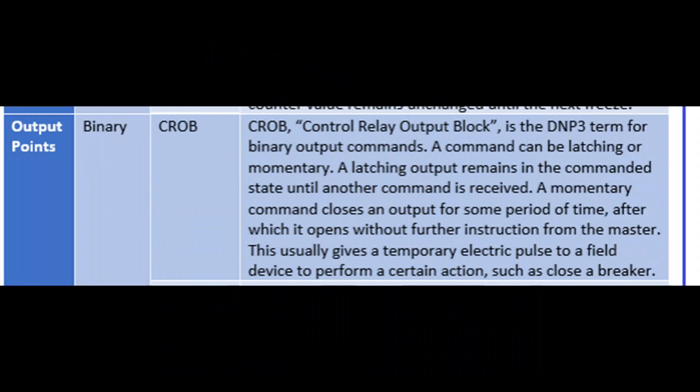The output point types for SCADA are binary and analog. Binary output points in DNP3 are called CROBs, which stands for Control Relay Output Block. A command to a CROB can be latching or momentary. A latching output remains in the commanded state until another command is received. A momentary command closes an output for some period of time, after which it opens without further instruction from the master — usually giving a temporary electrical pulse to a field device to perform an action such as closing a breaker.